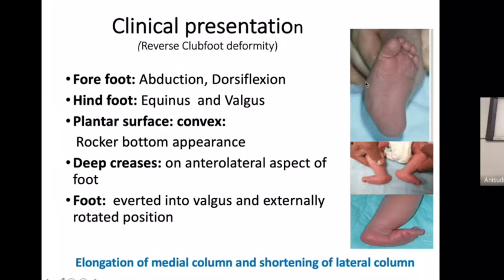Clinical presentation shows abduction and dorsiflexion of the foot, with the hindfoot in equinus and valgus position, while the plantar surface looks convex like a rocker bottom deformity. There is a decrease on the anterolateral aspect of the foot. In clubfoot the crease is on the medial side, while in vertical talus it is on the lateral side. The foot is in valgus and externally rotated position, with elongation of the medial column and shortening of the lateral column.